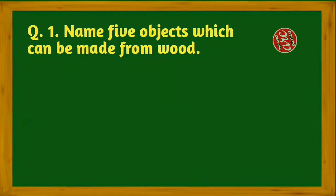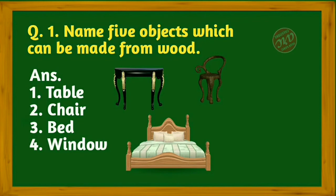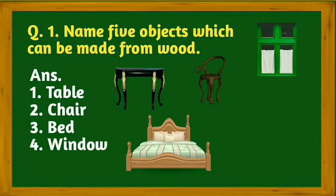Question number one: Name five objects which can be made from wood. Answer: Number one table, number two chair, number three bed, number four window, and number five door.